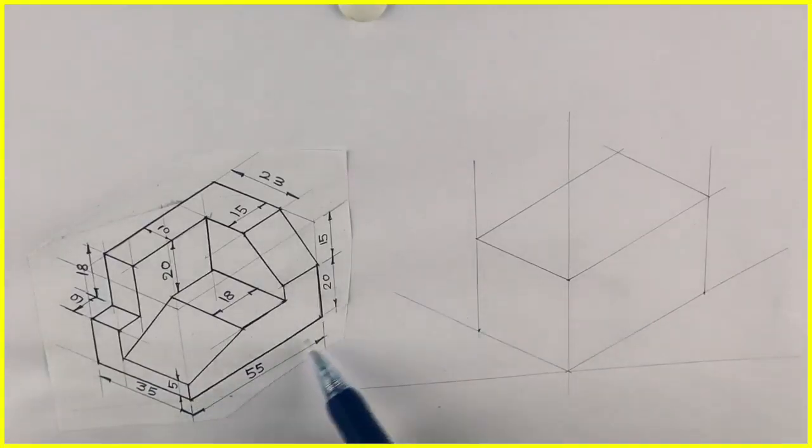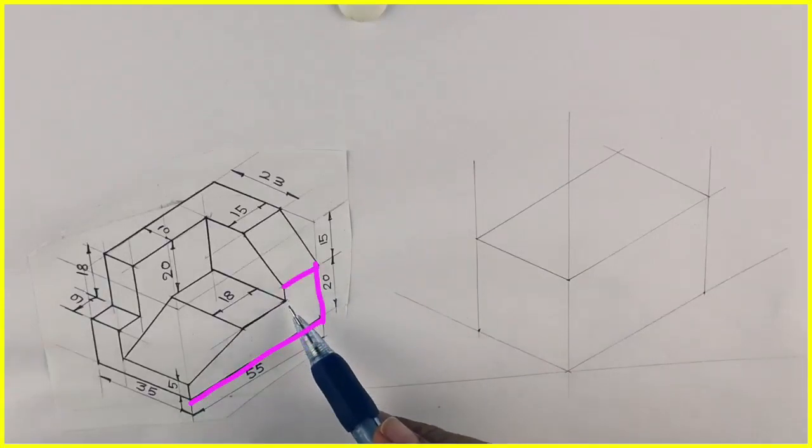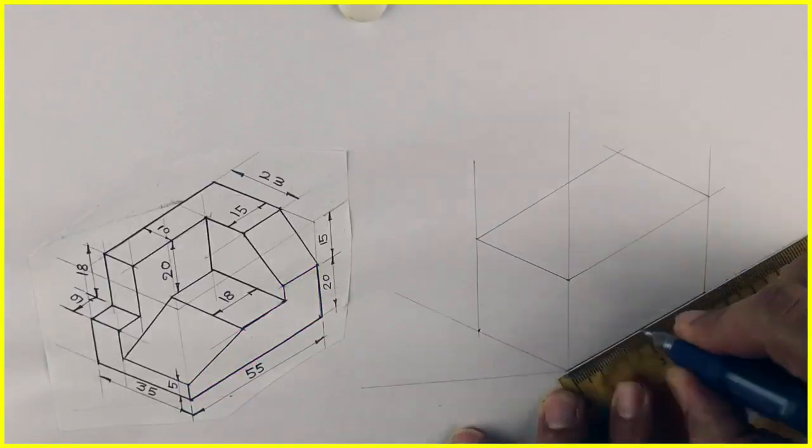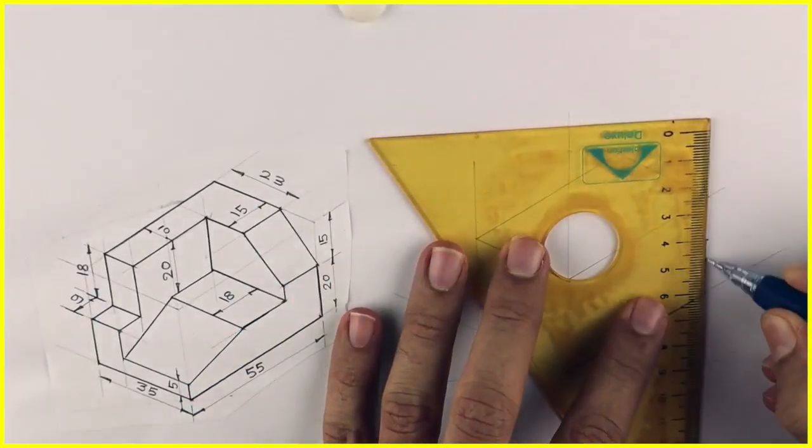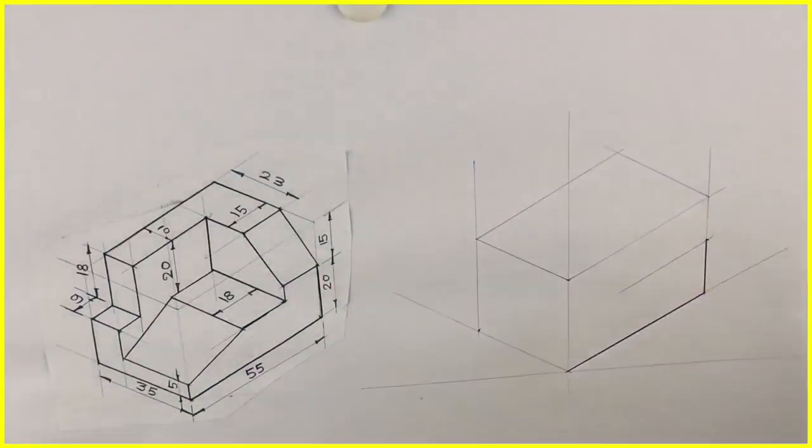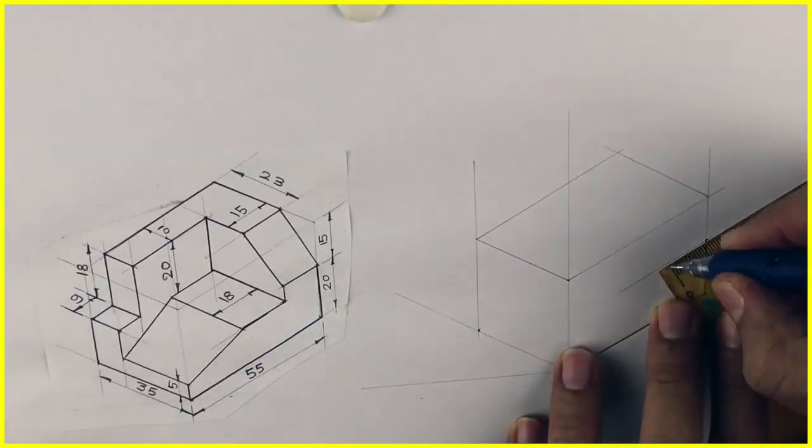After that, I'll draw the part which is nearer to me first. The part I can see from the right-hand side, I'll draw that. We'll mark 55, then 20, then 15, and go down by 5.